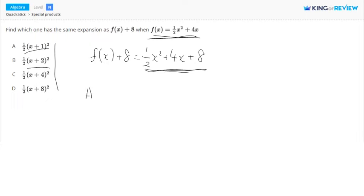Option A says 1 half of x plus 1 squared. So x plus 1 squared is just going to come out to x squared plus 2x plus 1. And then if you distribute this 1 half, it's going to come out to 1 half x squared plus x plus 1 half.